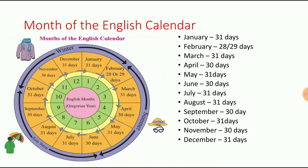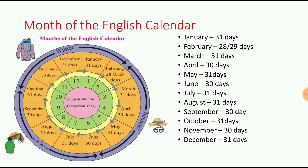The second month is February. February has 28 and 29 days. February में कितने days होते हैं? 28 and 29. जो leap year होते हैं उसमें 29 days होते हैं, otherwise 28 days.